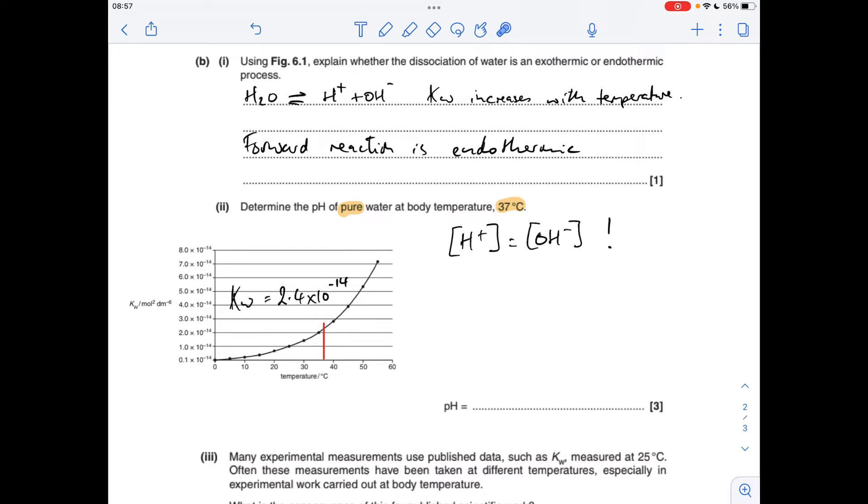So for this calculation, I'm going to use that value for Kw. Now, the fact that it's pure water is very important, because what that means is the H plus concentration and the OH minus concentration are the same. So we can simplify the Kw expression to Kw equals the concentration of H plus squared. So H plus concentration is the square root of Kw, so that's going to be the square root of my value,